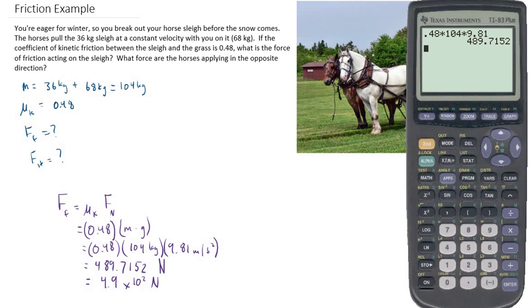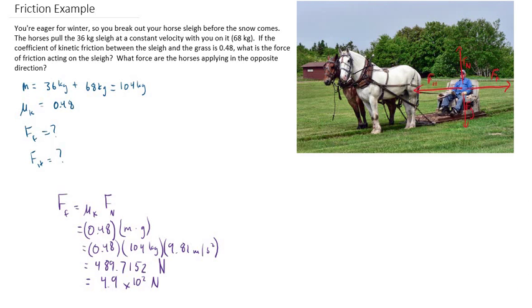The second part of the question asks what force the horses are applying in the opposite direction. To determine whether the horses' force is larger or smaller than friction, we ask: is the sleigh accelerating, and in which direction? Since the sleigh has constant velocity, it's not accelerating. If it's not accelerating,